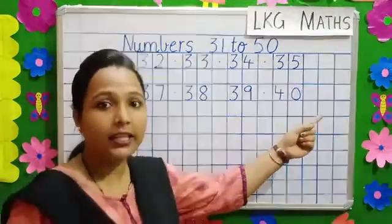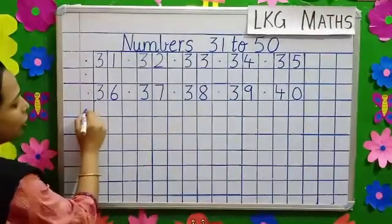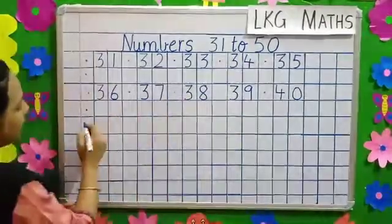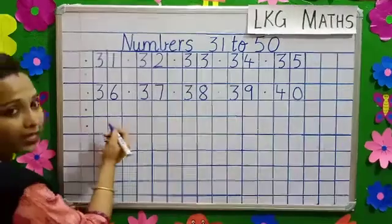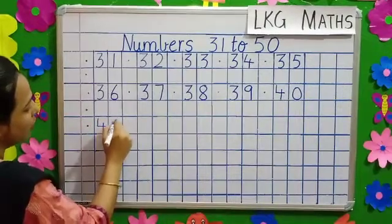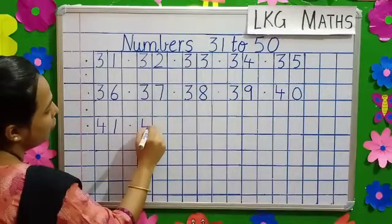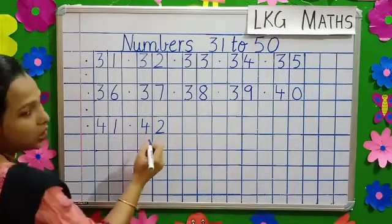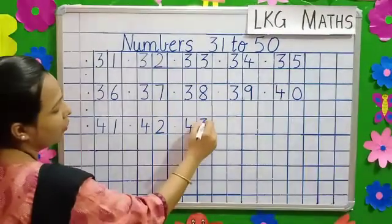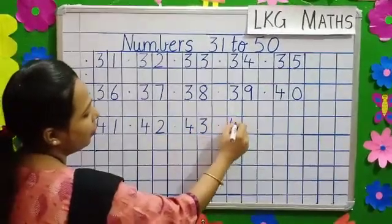When you finish this line, again come to the next line. Put a dot and leave this line once again. Come down, put a dot again and start writing beside it. 4, 1, 41. Dot 4, 2, 42. Dot 4, 3, 43. Dot 4, 4, 44.